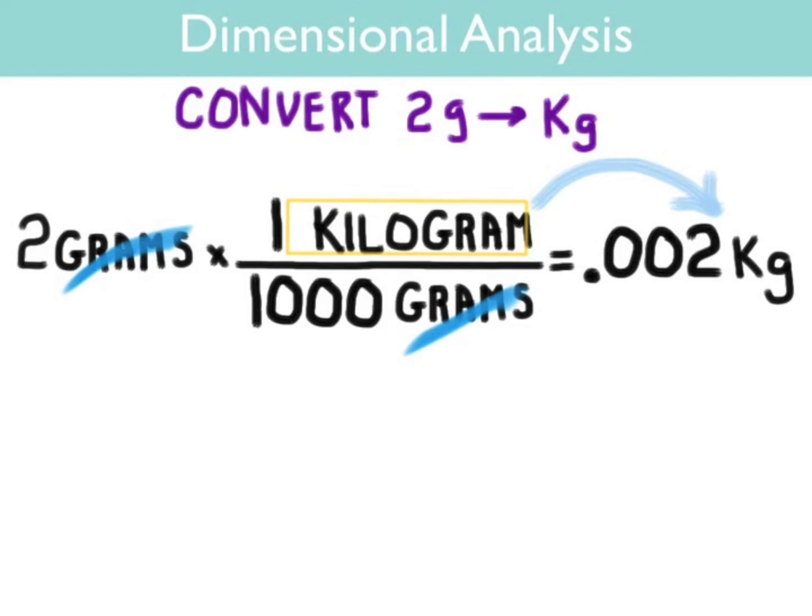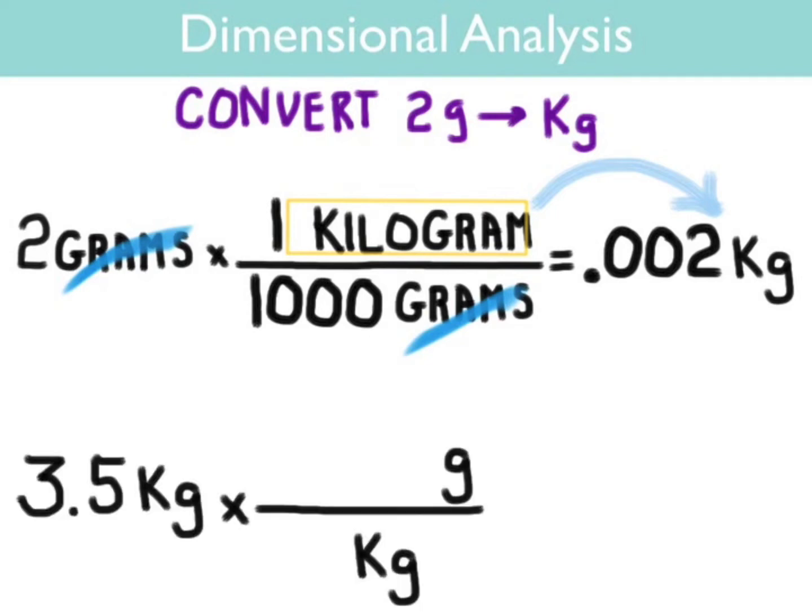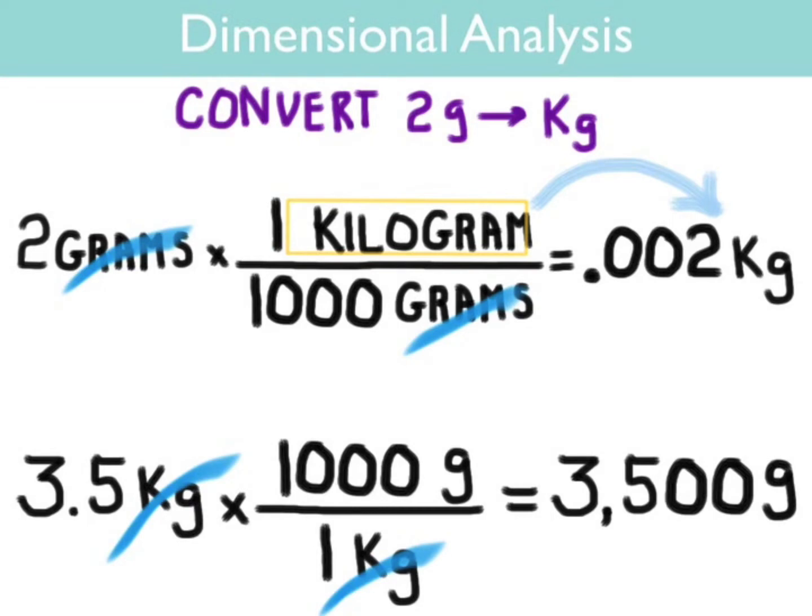You can do the same kind of transformation in reverse. Let's start with kilograms, cancel kilograms and multiply times grams. Notice that the kilograms cancel and we are left with a unit of grams. Put in the numbers that are appropriate and make the unit conversion true. There are a thousand grams per one kilogram. Notice that this is the opposite to the way it was written in the above problem. Now do out your math and you get 3500 grams.